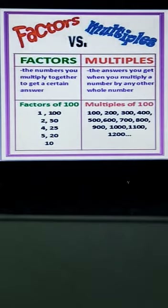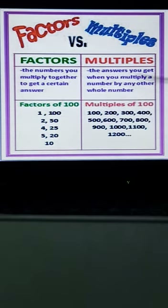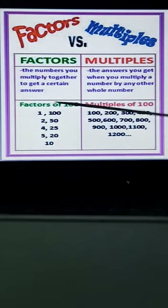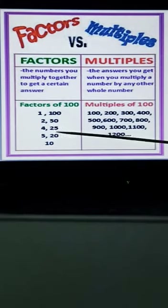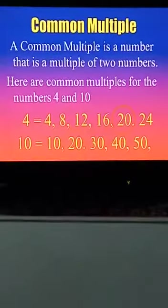Here is the comparison of factors and multiples. Factors are the numbers you multiply together to get a certain answer — those numbers are called factors. When you multiply a number by any other whole number, the answer you get is called the multiple. So the numbers we multiply are the factors, and the answer we get is the multiple. For example, 1, 100, 2, 54, 25, 5, 20, and 10 are factors of 100.